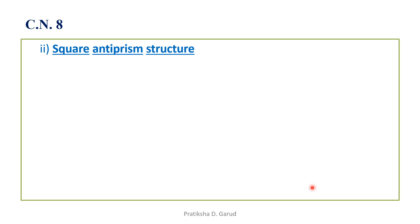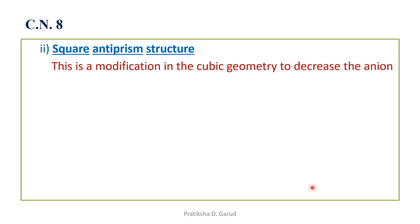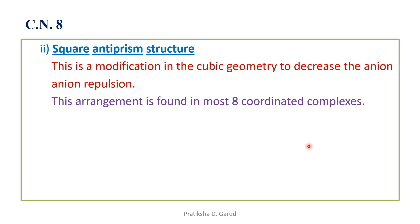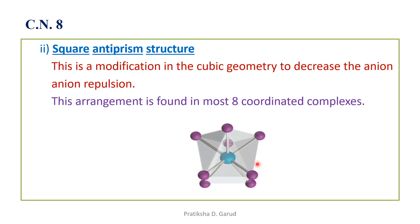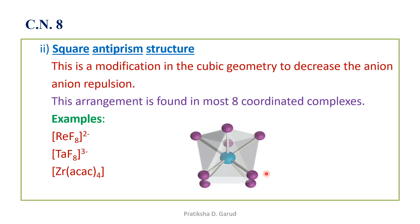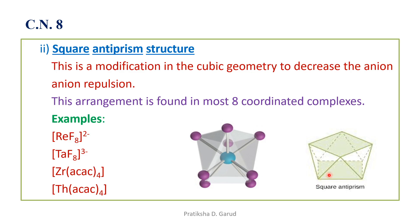The second geometry for coordination number eight is the square antiprism. This is a modification of the cubic geometry introduced to decrease ligand-ligand repulsions. This arrangement is found in most eight-coordinated complexes. Examples are [ReF8]²⁻, [TaF8]³⁻, Zr(acac)₄ (acetylacetonate), and Th(acac)₄. In this geometry, the top and bottom form squares and the ligands form a prism, giving the square antiprism.